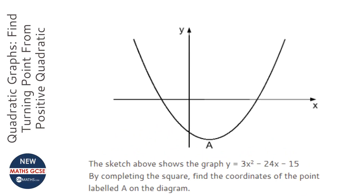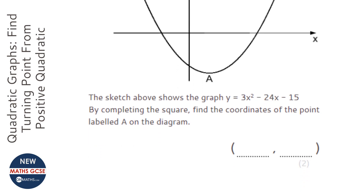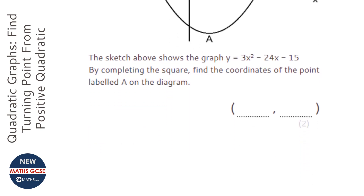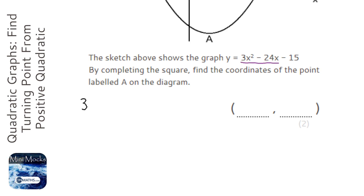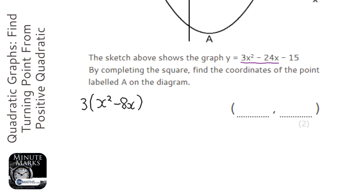This question starts by saying 'by completing the square', so we're going to complete the square first. The easiest way to do this when there's a coefficient of x that's not just one is to remove the coefficient from the first two terms. So it becomes x squared minus 8x, and then minus 15.